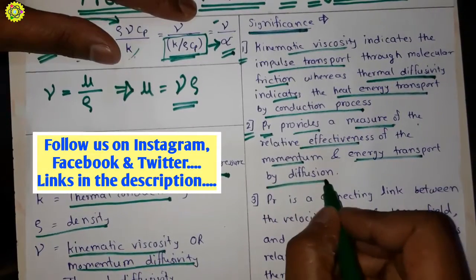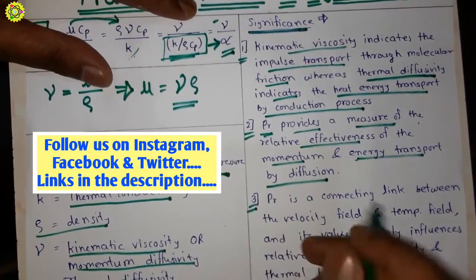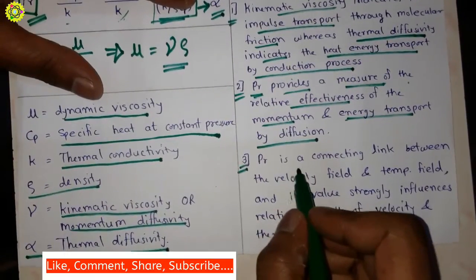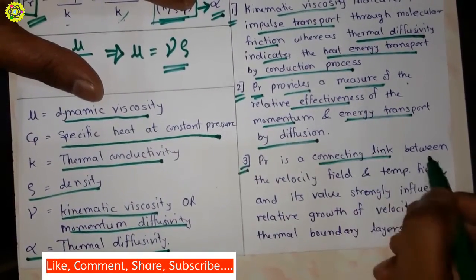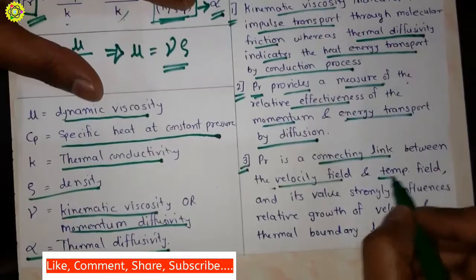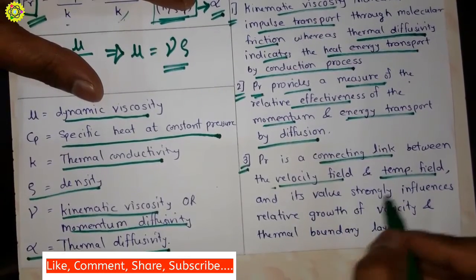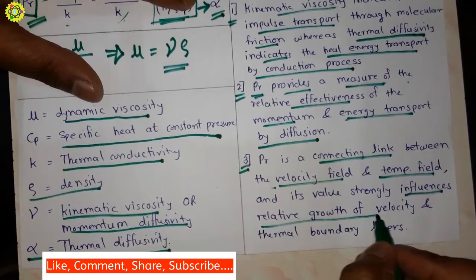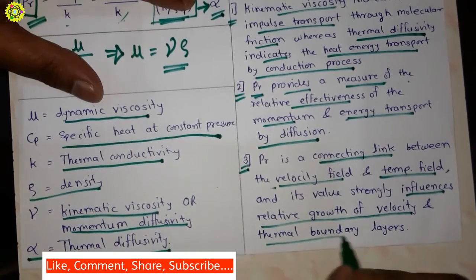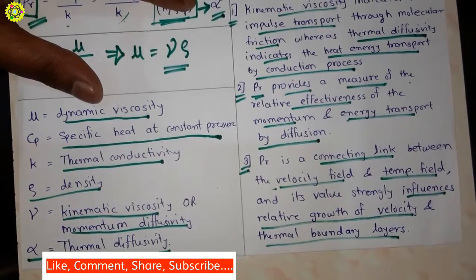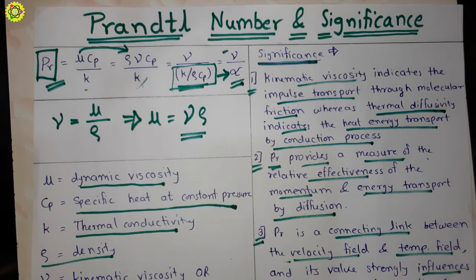Third significance is: Prandtl number is a connecting link between the velocity field and temperature field, and its value strongly influences relative growth of velocity and thermal boundary layers. So friends, in this video we have studied Prandtl number and its significance.